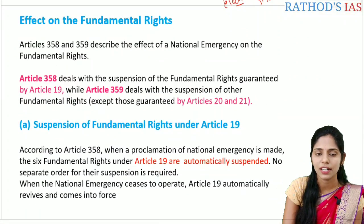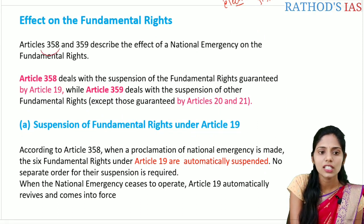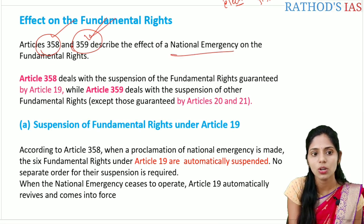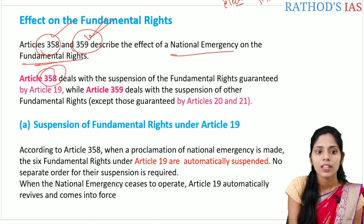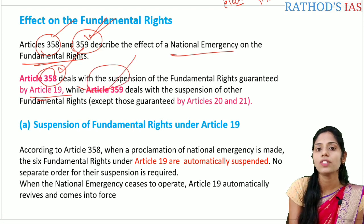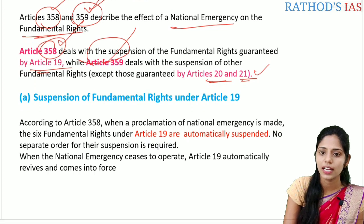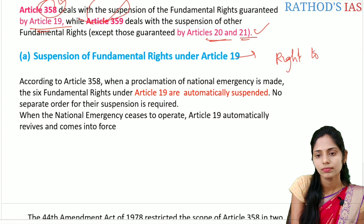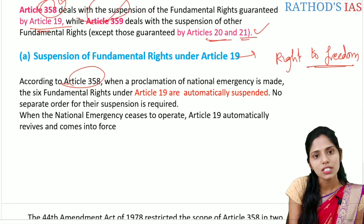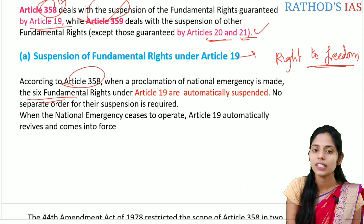Let us see the effect on fundamental rights. To understand this you need to remember two important articles — article 358 and article 359. Article 358 mainly deals with the suspension of fundamental rights guaranteed under article 19 (right to freedom). Article 359 talks about suspension of other fundamental rights, other than articles 20 and 21. According to article 358, whenever there is a proclamation of national emergency, the six fundamental rights guaranteed under article 19 are automatically suspended — no separate order is required for this suspension. Whenever the national emergency ceases to operate, these fundamental rights come back into force.